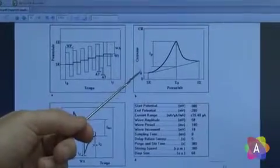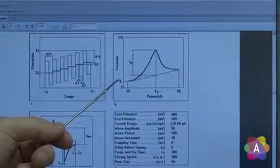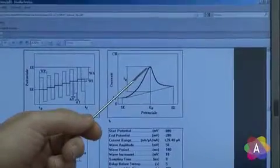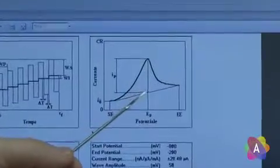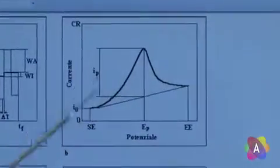Also in this technique, a peak-shaped graph is shown at the end of the scanning. The maximum peak is set in correspondence of discharge potential of the analyte, and the height is proportional to its concentration.